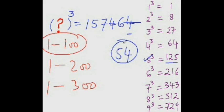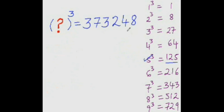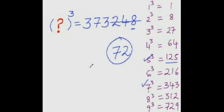Let's practice one more. Try to find the cube root of this number. The last digit is 8, and the conjugate of 8 is 2, so write 2 here and strike out the last three digits. You are left with 373. The number whose cube is nearest to 373 is 7, because 7 cubed is 343. So the answer is 72.